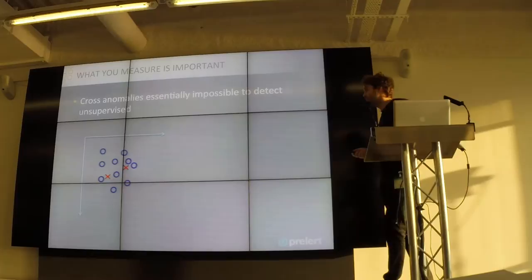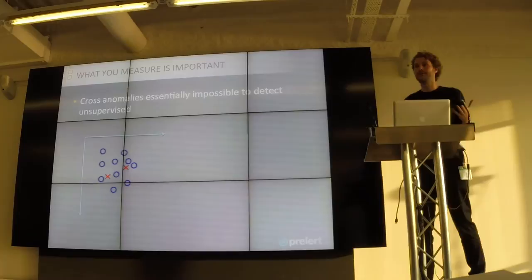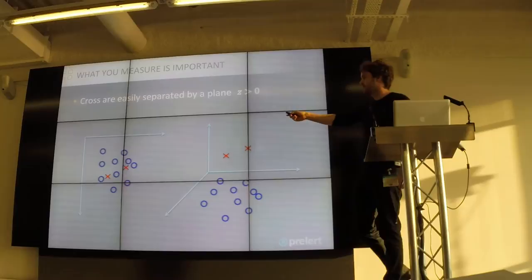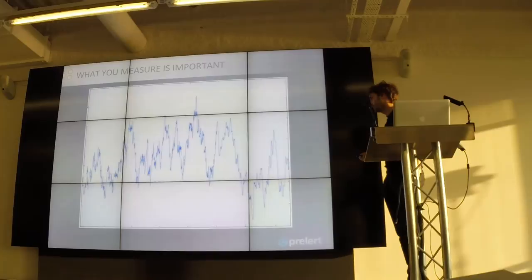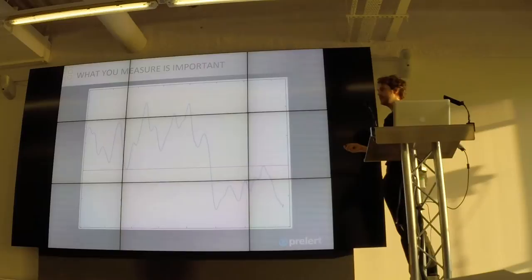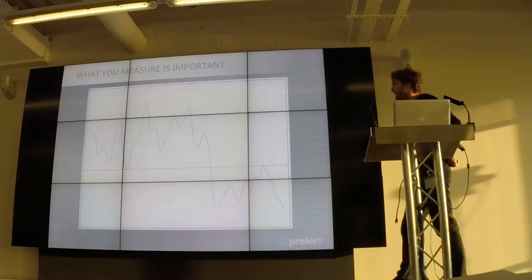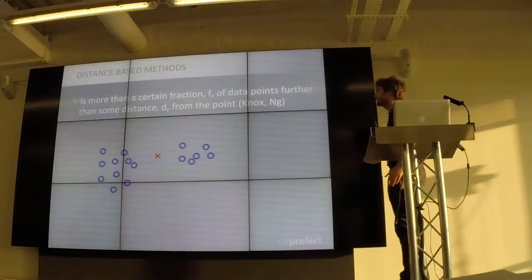What you measure is very important. Most anomaly detection happens in an unsupervised environment — you don't have someone marking up what they want to know about; they want you to tell them what's unusual. In an unsupervised setting you can't differentiate clusters without the right features, but if you measure the right feature they become very simply separable. For instance, if I know the generative process changed such that variance in a small time interval changed, I can detect that change very simply by calculating variance in a window.